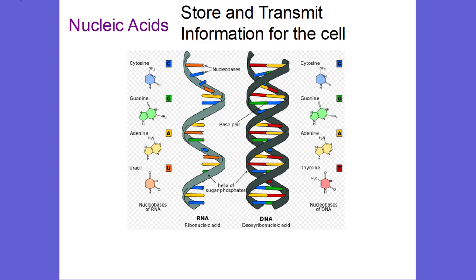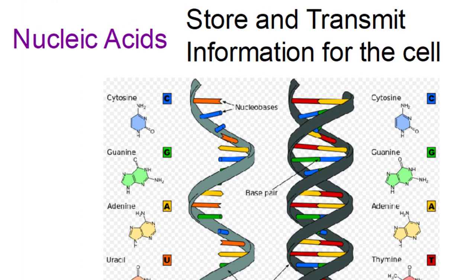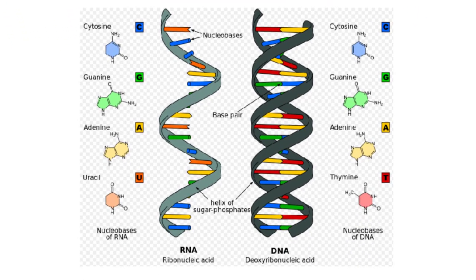Last but not least, we have nucleic acids. Nucleic acids store and transmit information of the cell. The monomer is called nucleotides, which make up what we call nucleic acids. The rungs are made up of nucleobases such as cytosine and guanine, adenine and thymine. C only interacts with G, and A only interacts with T. Our two main types of nucleic acids are RNA and DNA — ribonucleic acid and deoxyribonucleic acid.